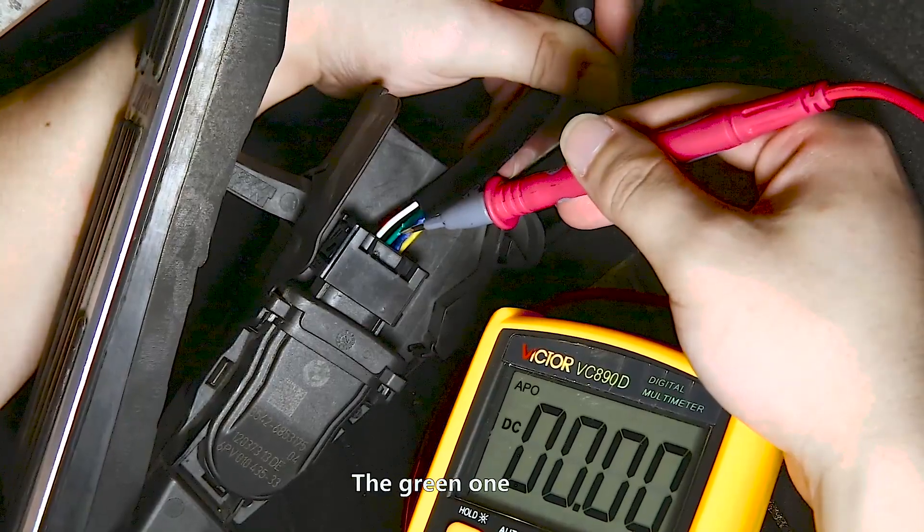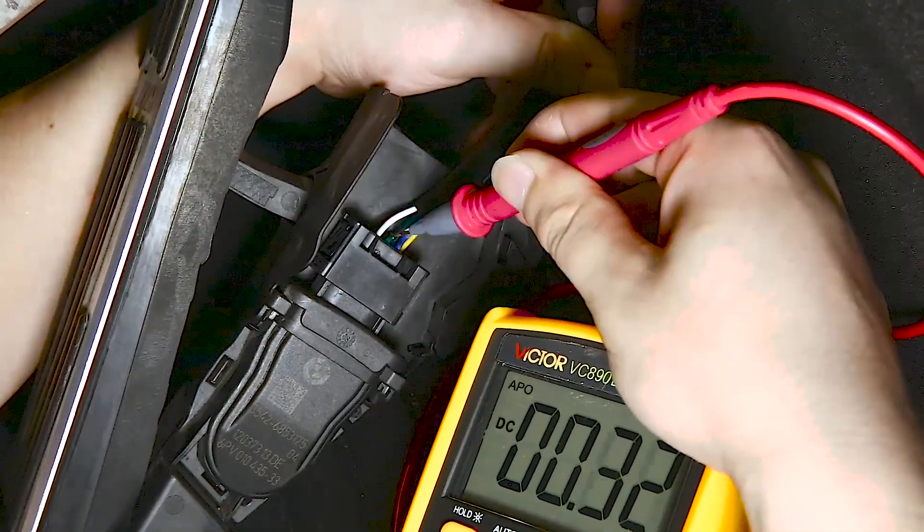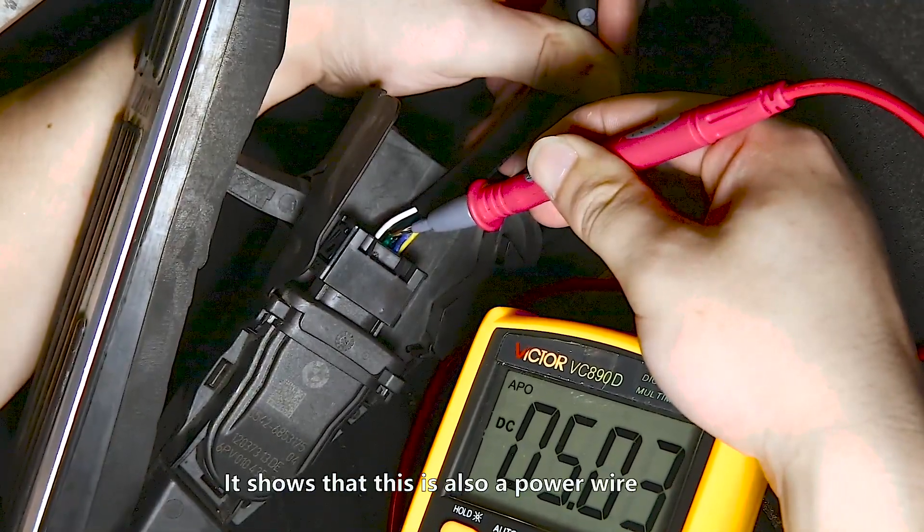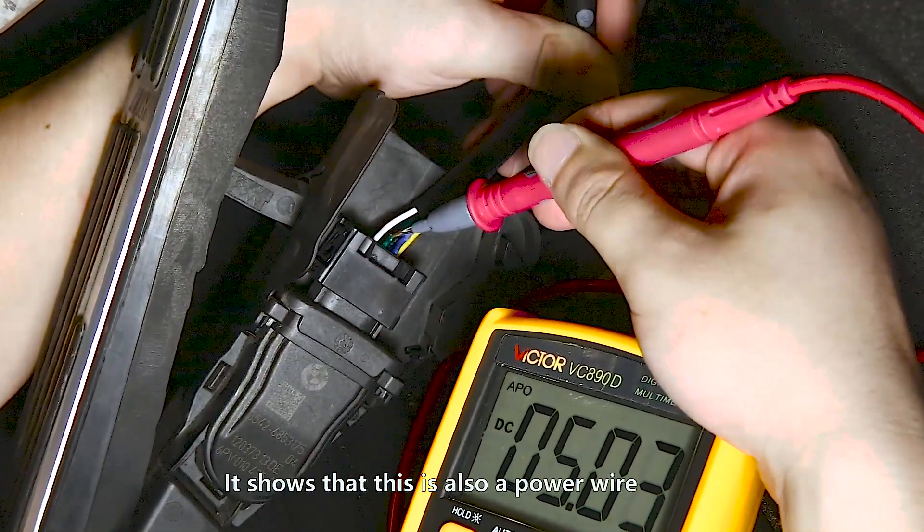The green one. The data is 5.03. It shows that this is also a power wire.